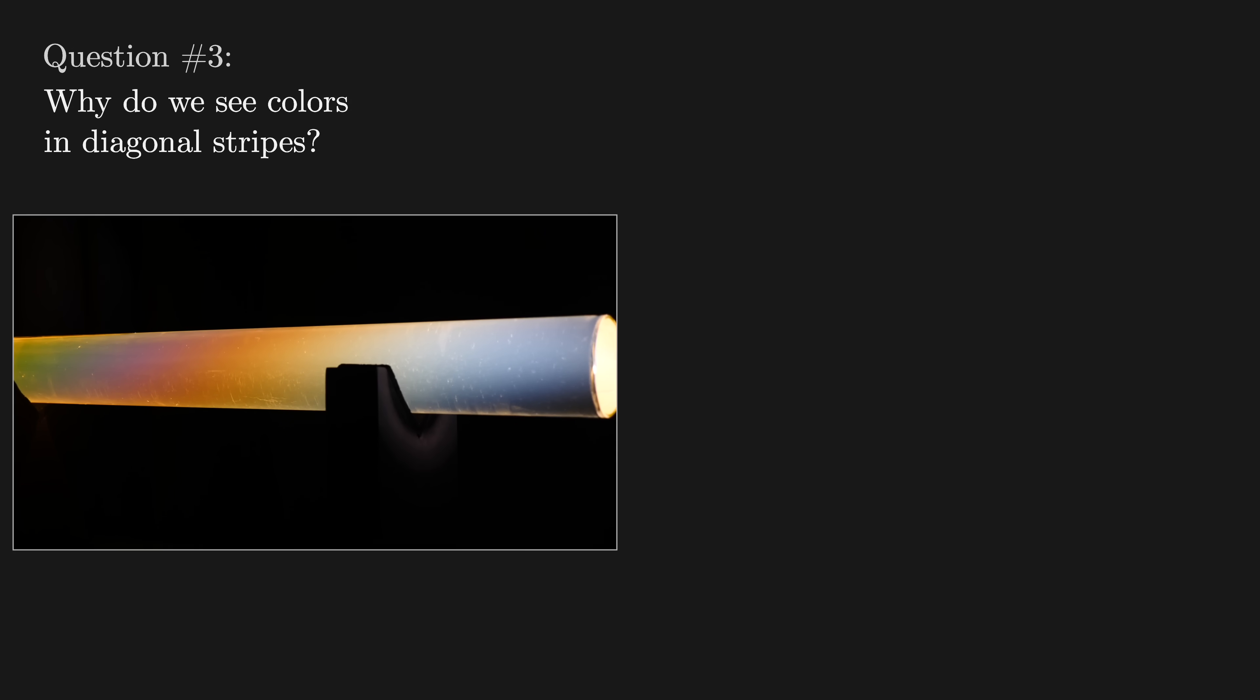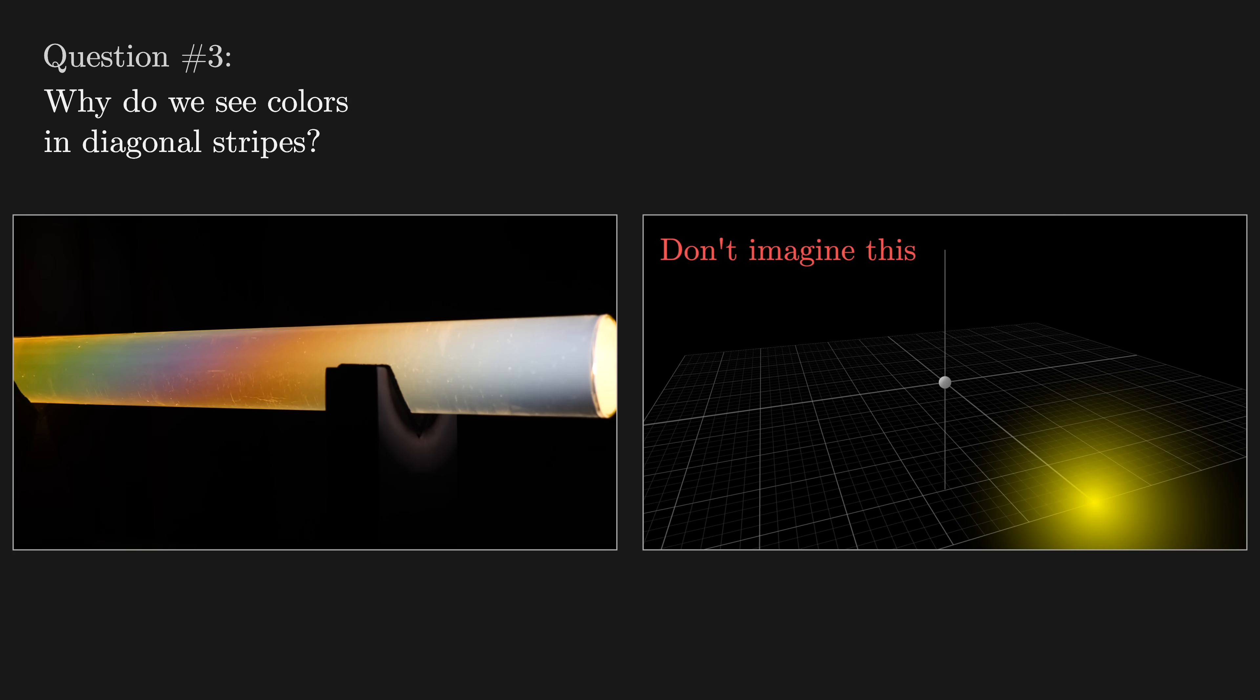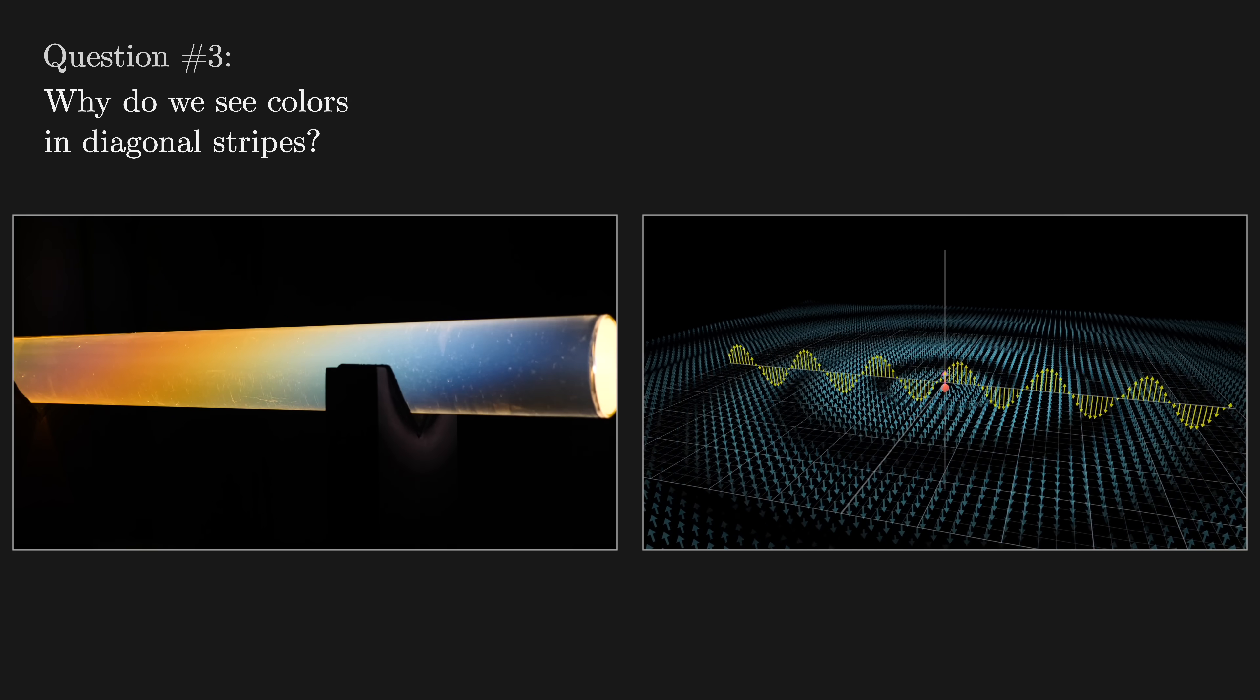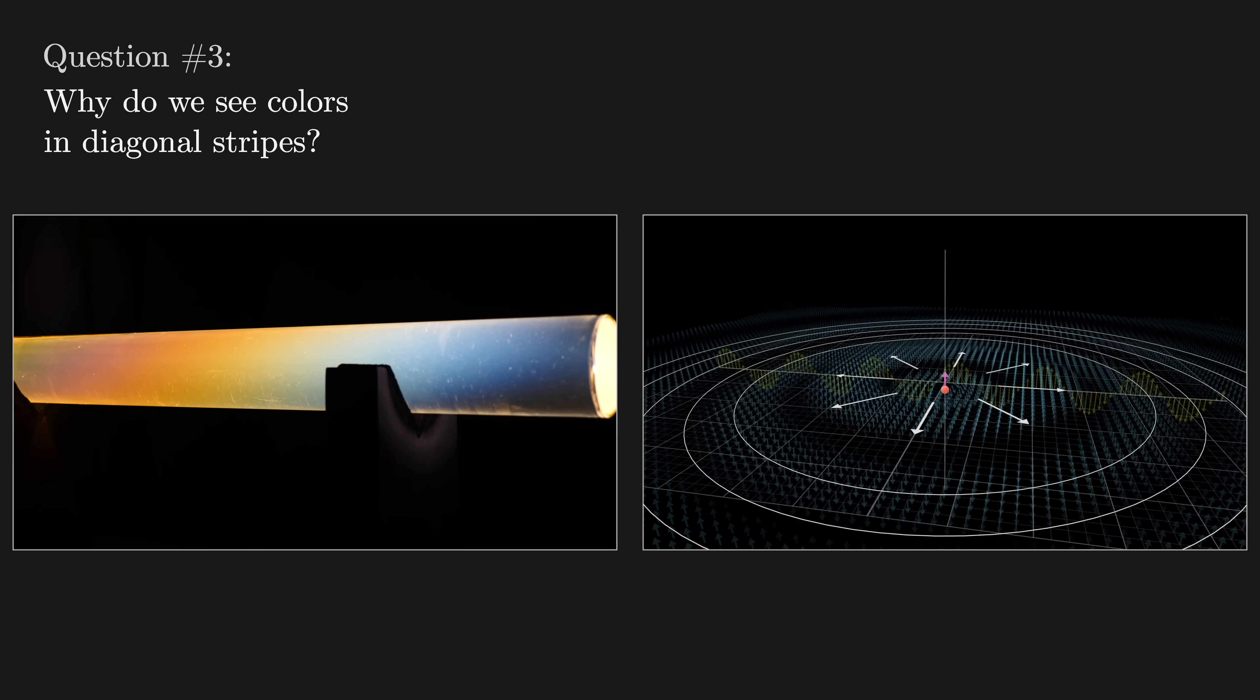And the third question comes down to the fact that when light scatters off of a material, it's not like some projectile bouncing in any old direction. The direction of scattering depends on the direction of polarization, and there's a very good reason for it.